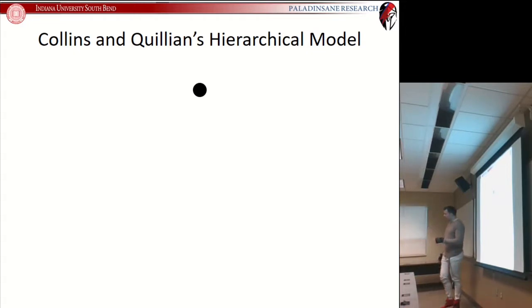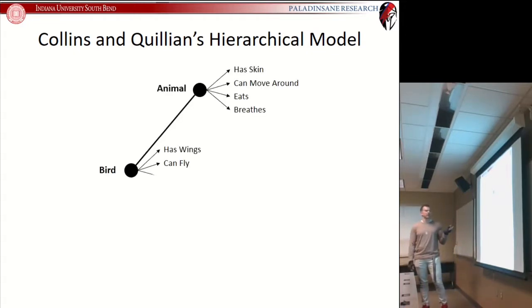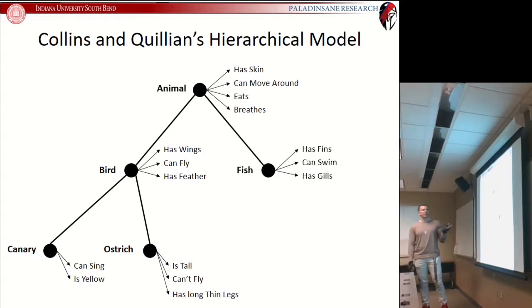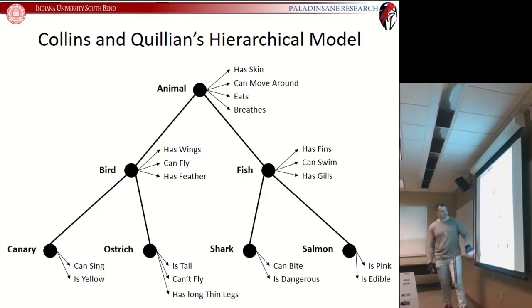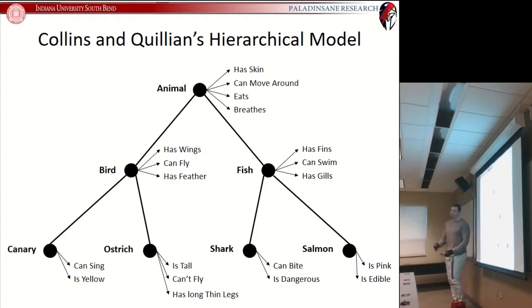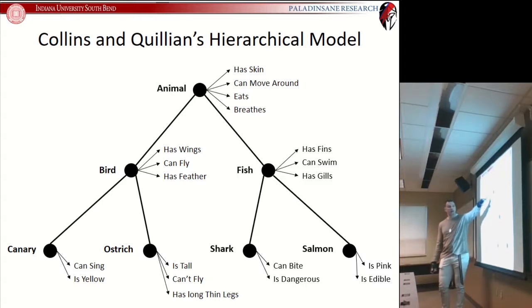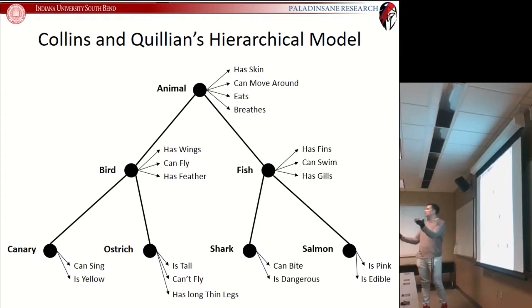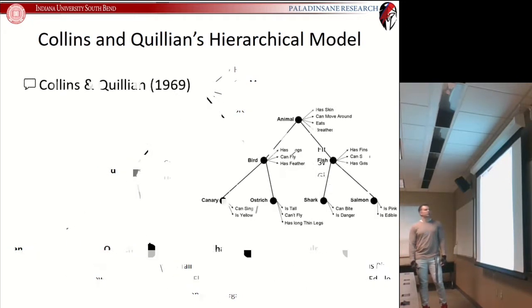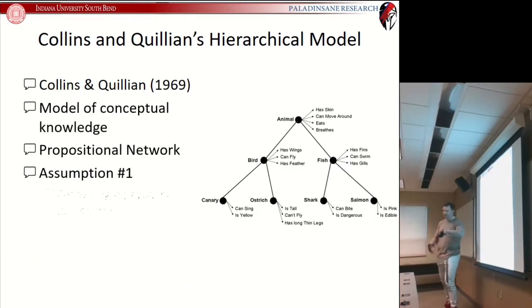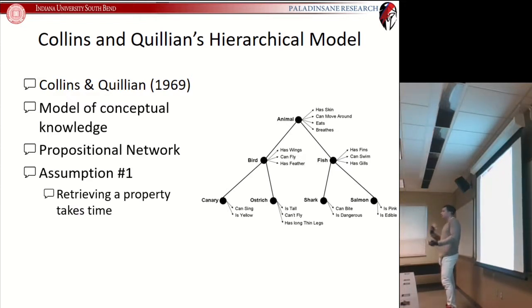So the hierarchical model, if you recall from last class, is a model about how information in our mind is organized. The idea is that we have different hierarchies with information organized in terms of nodes — such as this node for canary — and attached to that are features or properties that we know about canaries. The hierarchies are the different categories and subcategories within which these concepts belong: canary belongs to bird, bird belongs to animal, shark belongs to fish, fish also belongs to animal.